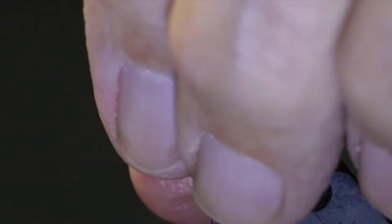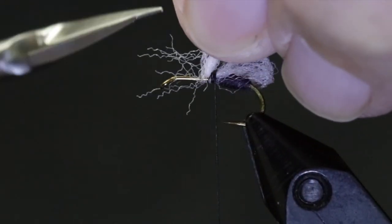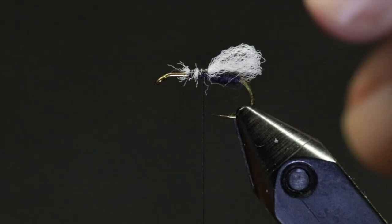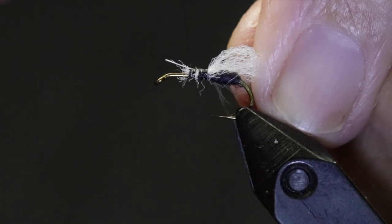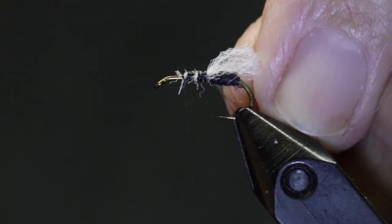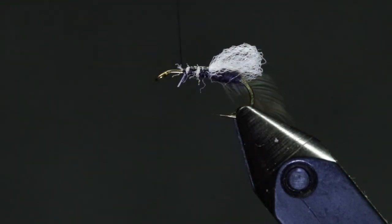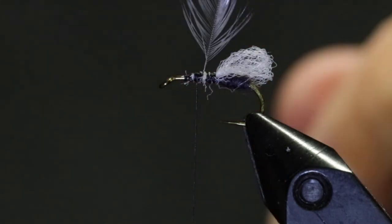After securing the wing and clipping the butt ends, you're ready for the hackle. Any good dry fly hackle will do for the legs. Here I'm using a medium dun dry fly saddle. Once again, color is not as important as the size. Black or any shade of dun will work.